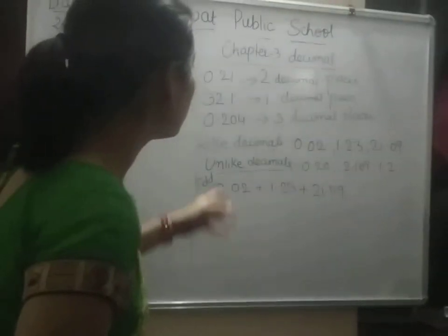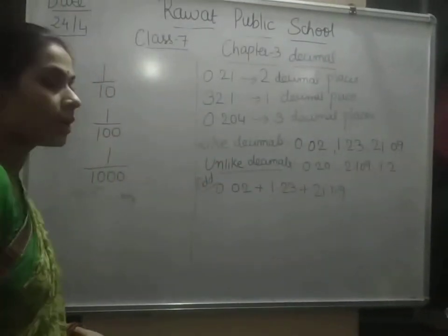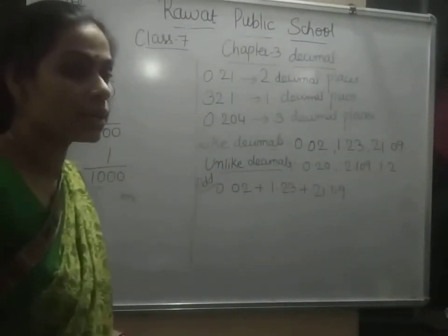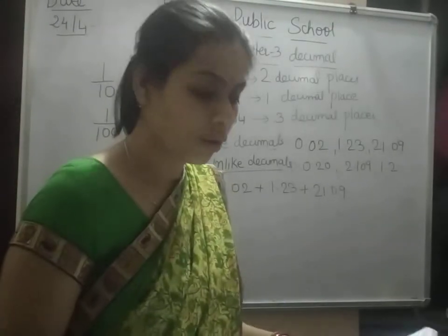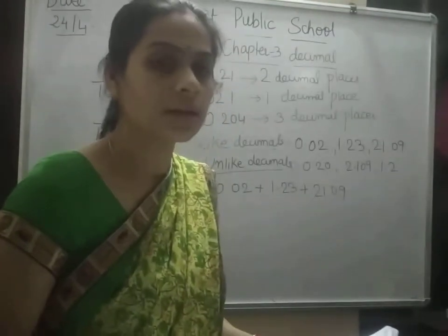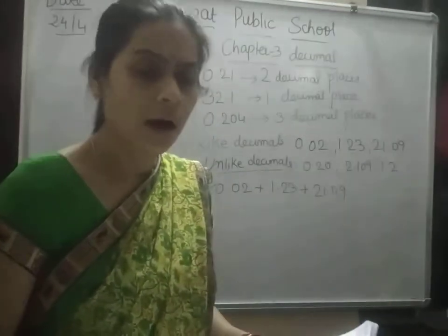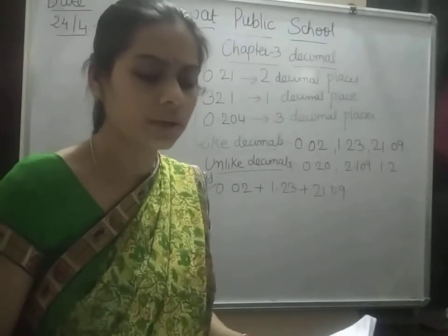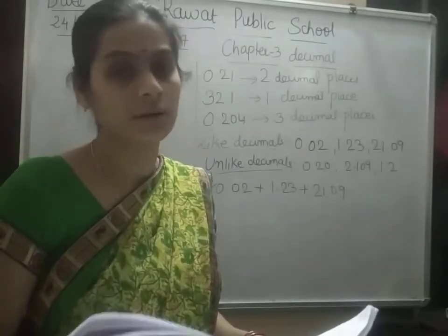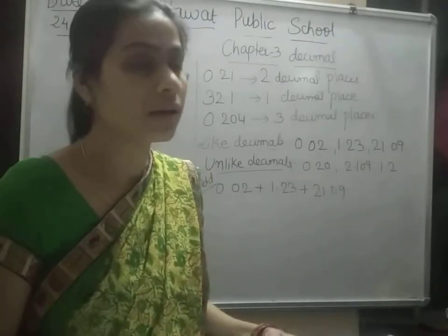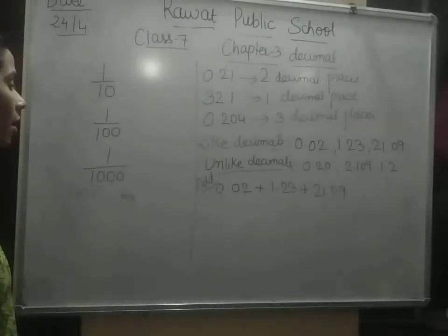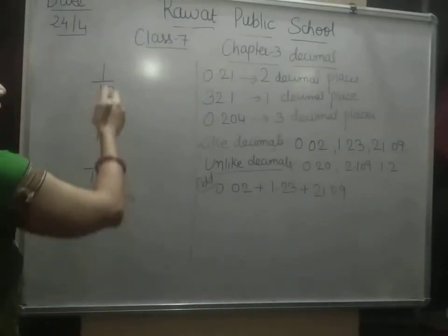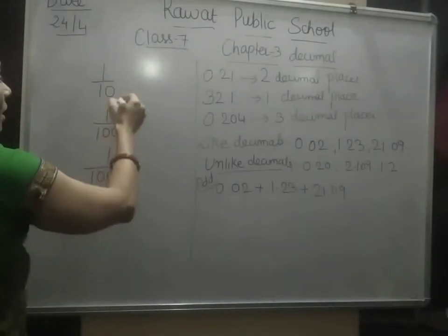So, decimals. What can you tell about decimals? A fraction with the denominators 10, 100, 1000, and so on can also be written as a decimal — as 1/10, 1/100, and 1/1000. So how can we write 1/10?